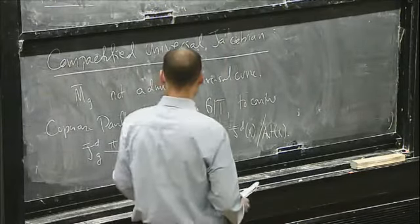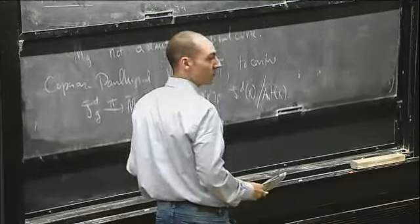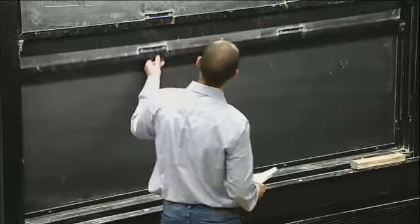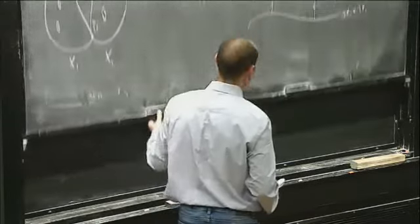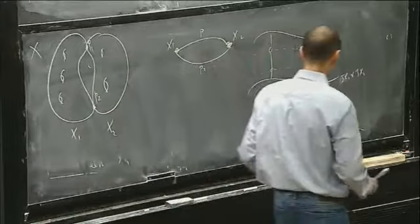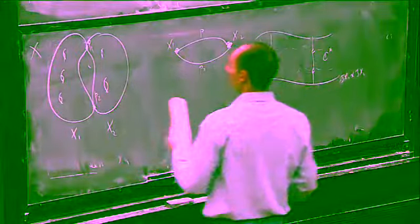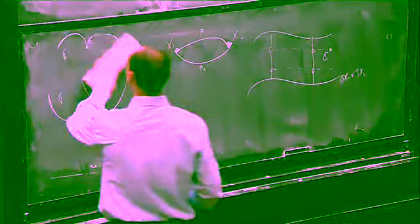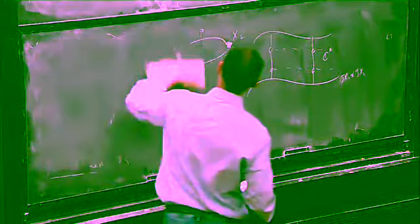Caporaso and Pandharipande use a variation of GIT argument to construct some space. I'm going to call it J-bar_D,g mapping to M_g-bar. This is some projective variety such that pi inverse of X equals the compactified Jacobian of X up to the automorphisms of X.